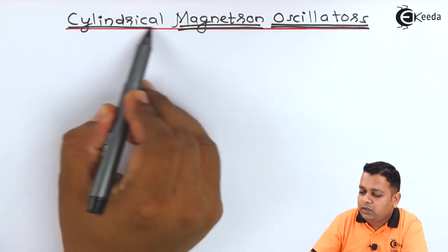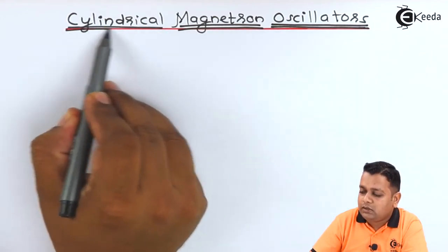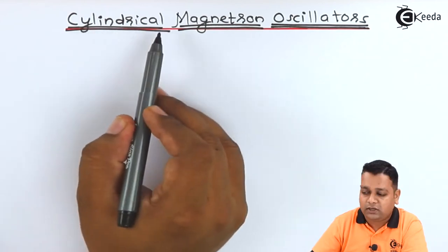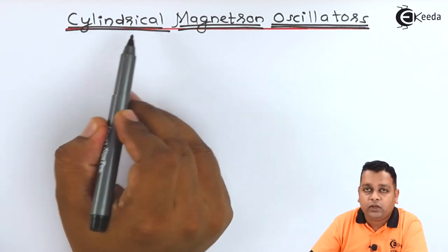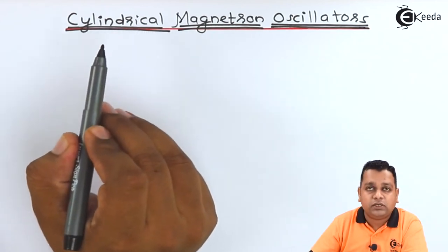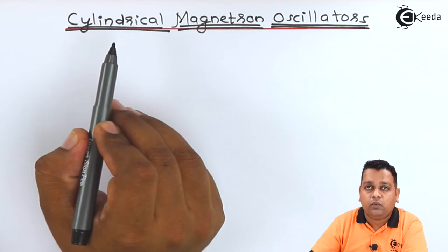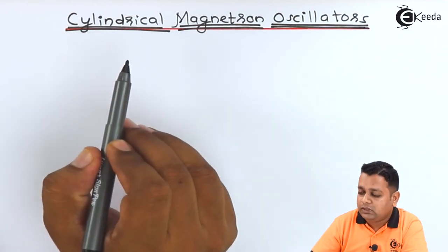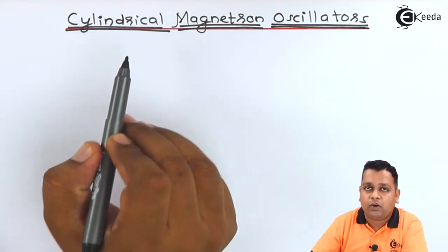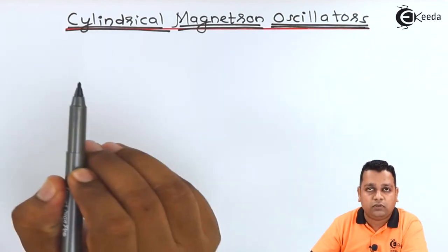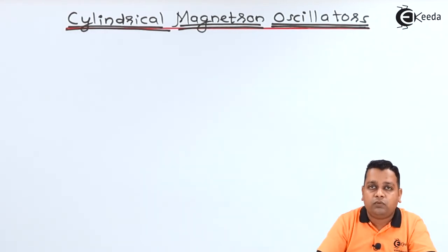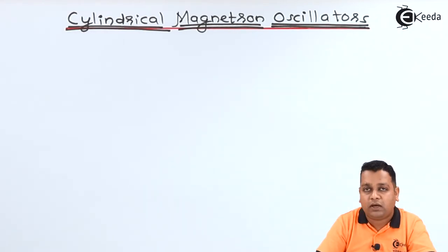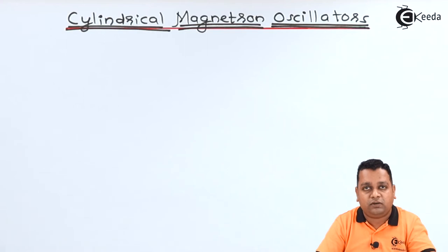Another term in the title is 'cylindrical,' which gives us the idea with respect to the dimensional shape of this particular device. First of all, we take a simple diagram to explain the cylindrical magnetron oscillator.